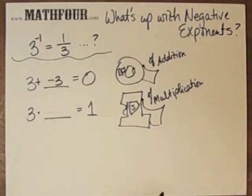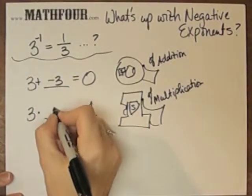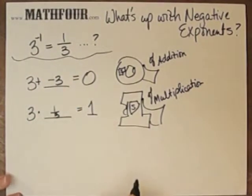3 times what equals 1? Well in the same vein, we can look up here, we can go 3 times 1 third equals 1.